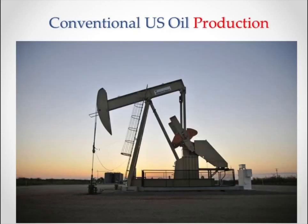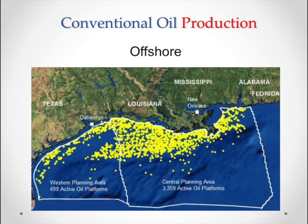There are two broad categories of U.S. oil production: conventional and unconventional. Conventional oil involves drilling a hole in the ground and pumping oil out — either land-based or offshore. The offshore production is in the Gulf of Mexico, off the coast of Texas, Louisiana, Mississippi, and Alabama. The Gulf is rich in oil, and these oil platforms are pumping oil continuously.